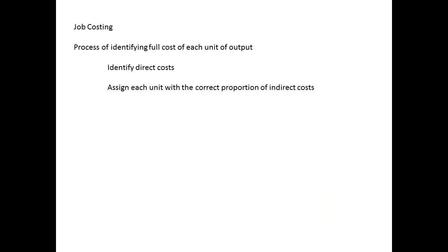For job costing to be effective, we have to be able to do two things. We must identify the direct costs, and we must identify the indirect costs. Then we must assign each unit an appropriate proportion of the indirect costs.